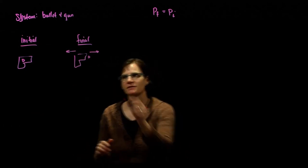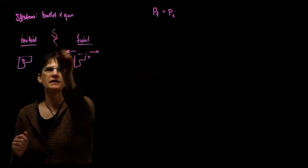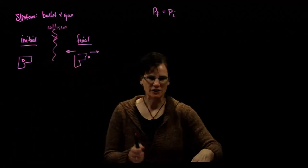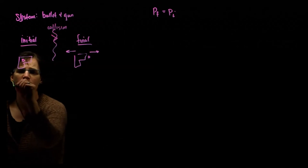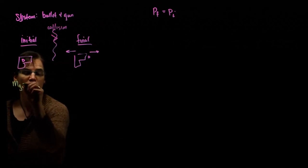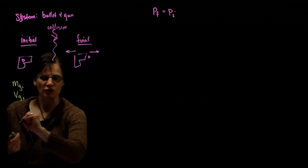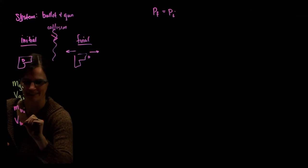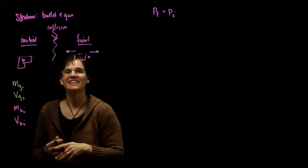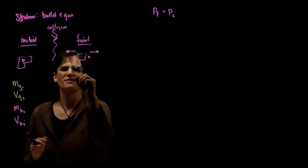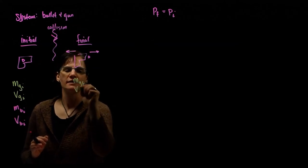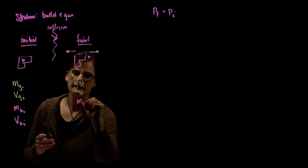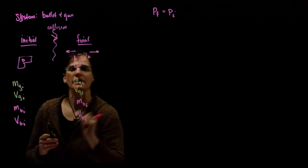Now we define each element of the system — this is the point of the collision, from the initial case to the final case. We have the mass of the gun initial, the velocity of the gun initial, the mass of the bullet initial, and the velocity of the bullet initial. The same is true in the final condition: mass of the gun final, velocity of the gun final, mass of the bullet final, and velocity of the bullet final, after the collision.